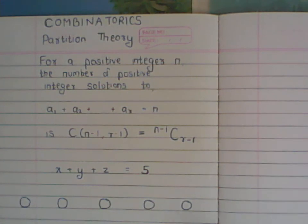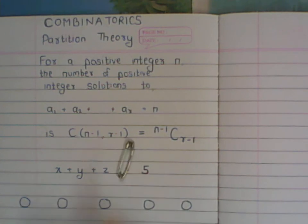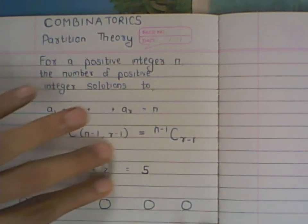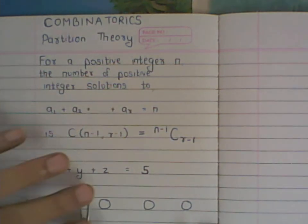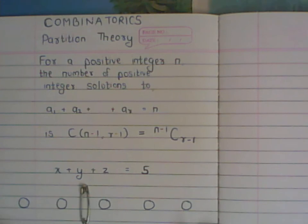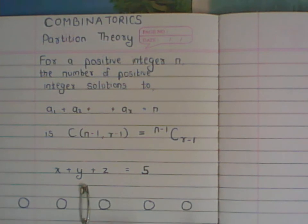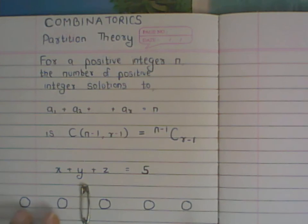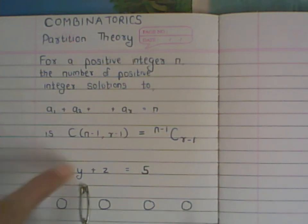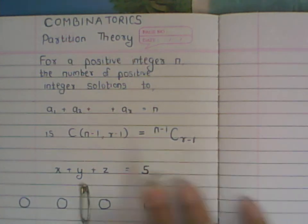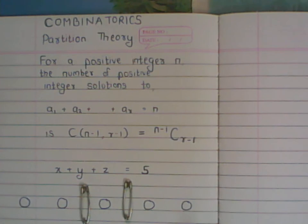We can think about this using partitions — physical dividers or pins. If you have five balls and place one pin, it splits them into two groups. For example, placing the pin here gives one group of two balls and another group of three balls. So one partition creates two groups, meaning to make three groups you would need two partitions.